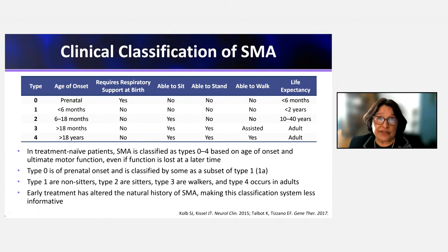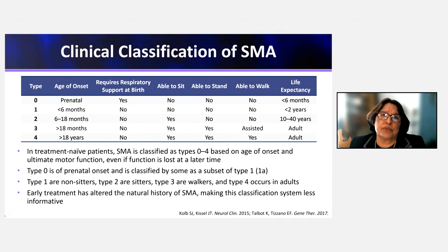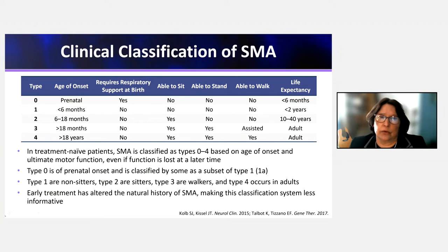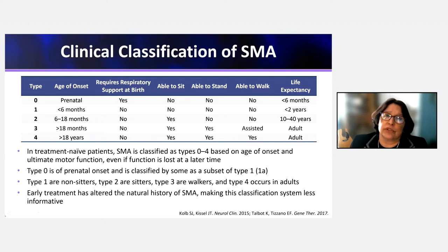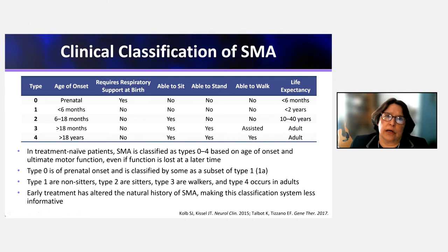Type 2 SMA is classified based on the ability to sit, though patients may lose that ability over time. It presents between 6 and 18 months of age. These patients do not have respiratory requirements in infancy or under two years of age. They are able to sit; some might bear weight, but they cannot walk by definition. Survival is close to normal, though past age 40 or 50 is not common.